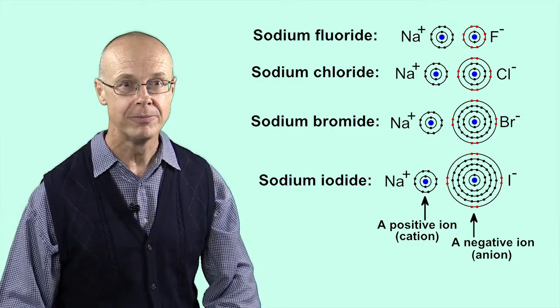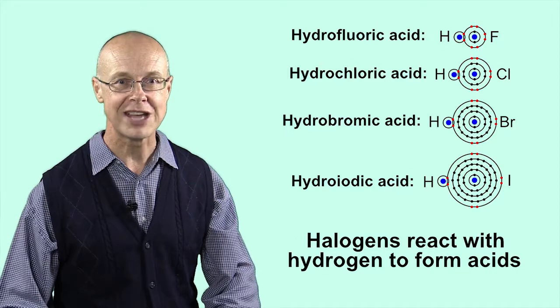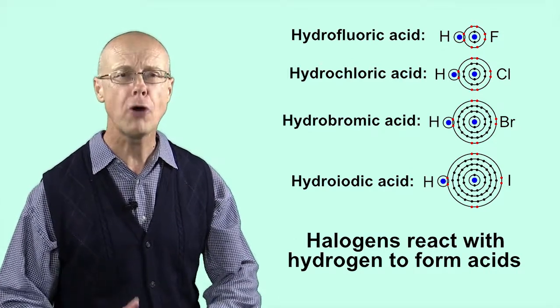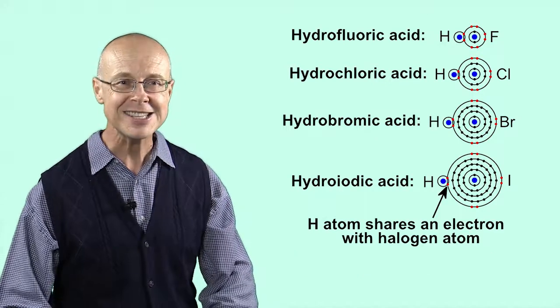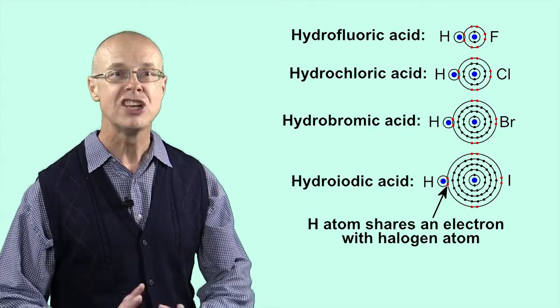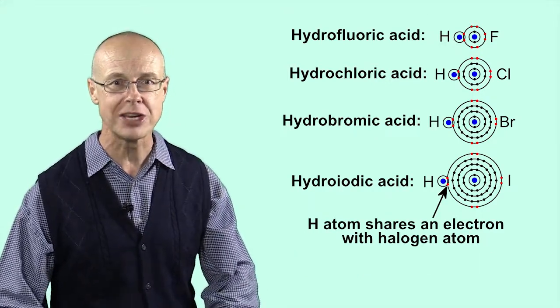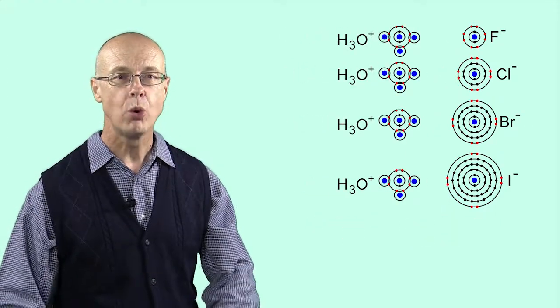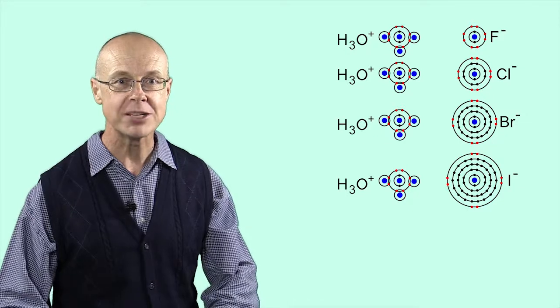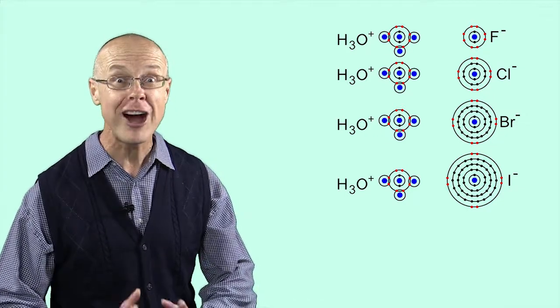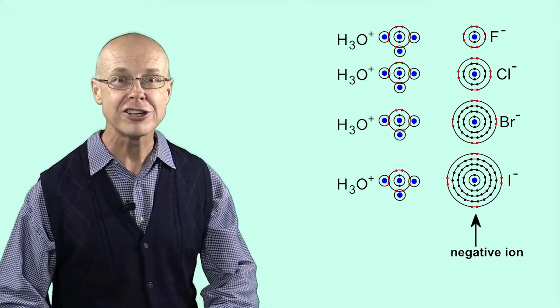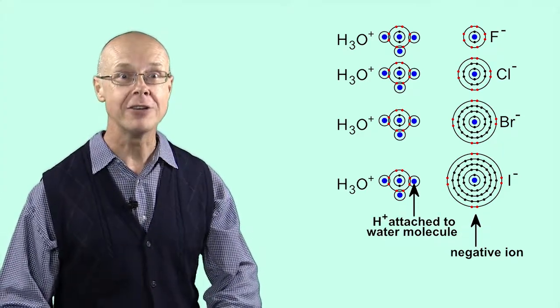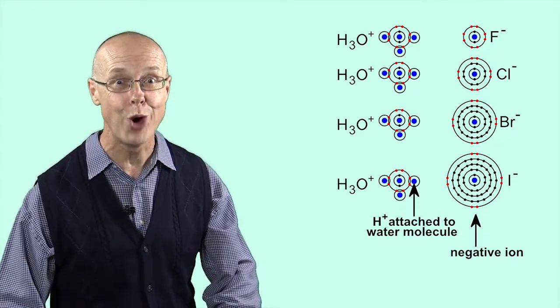Another way halogens can fill their outer shells is by reacting with hydrogen to form acids. In this case, a hydrogen atom shares its electron with a halogen atom. When these acids are dissolved in water, once again the halogen atom steals the electron off hydrogen, forming a negative ion in the process, while the positive hydrogen ion attaches itself to a water molecule.